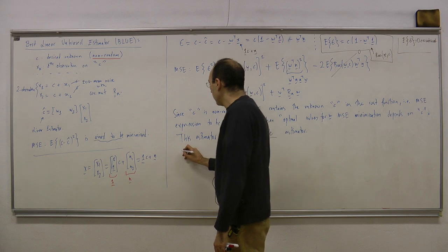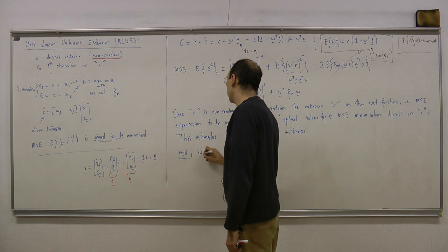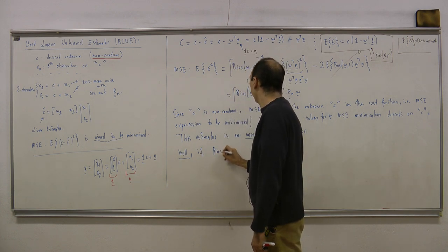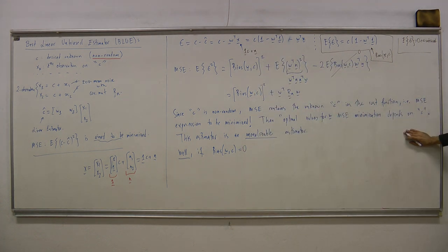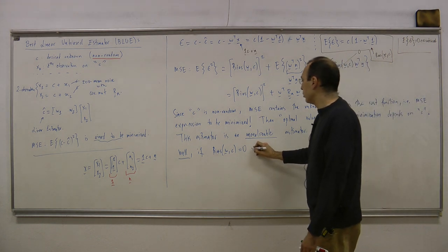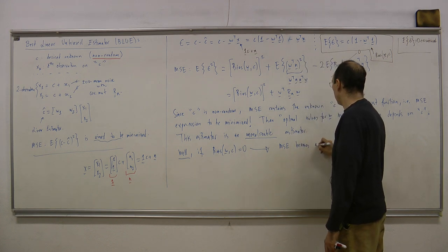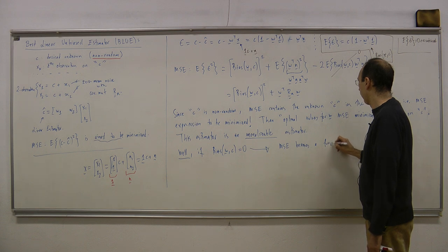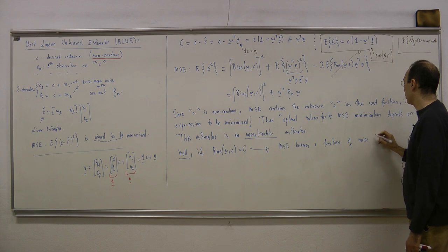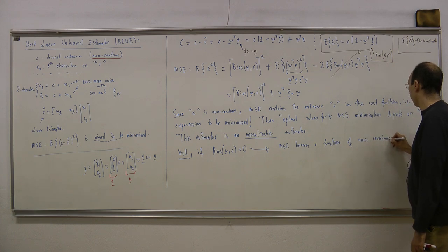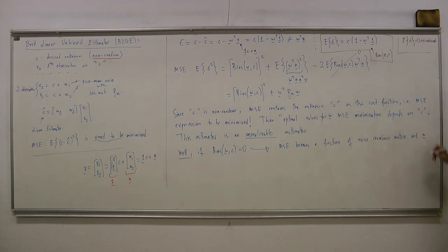One approach: if the bias term equals zero, the MSE becomes only a function of the noise covariance matrix Rn and the weight vector W — with no dependence on the unknown C.